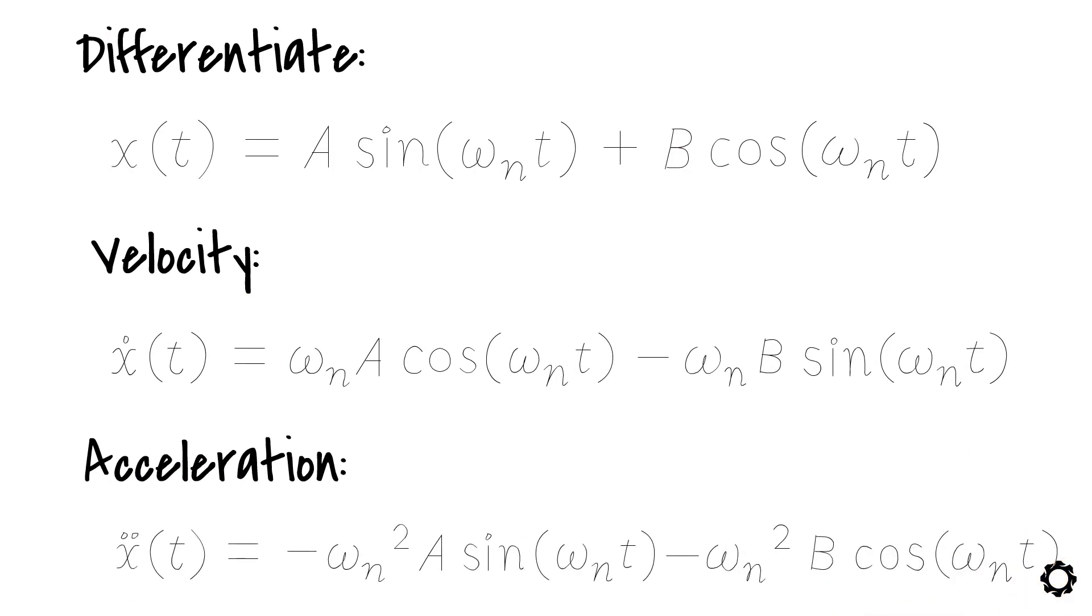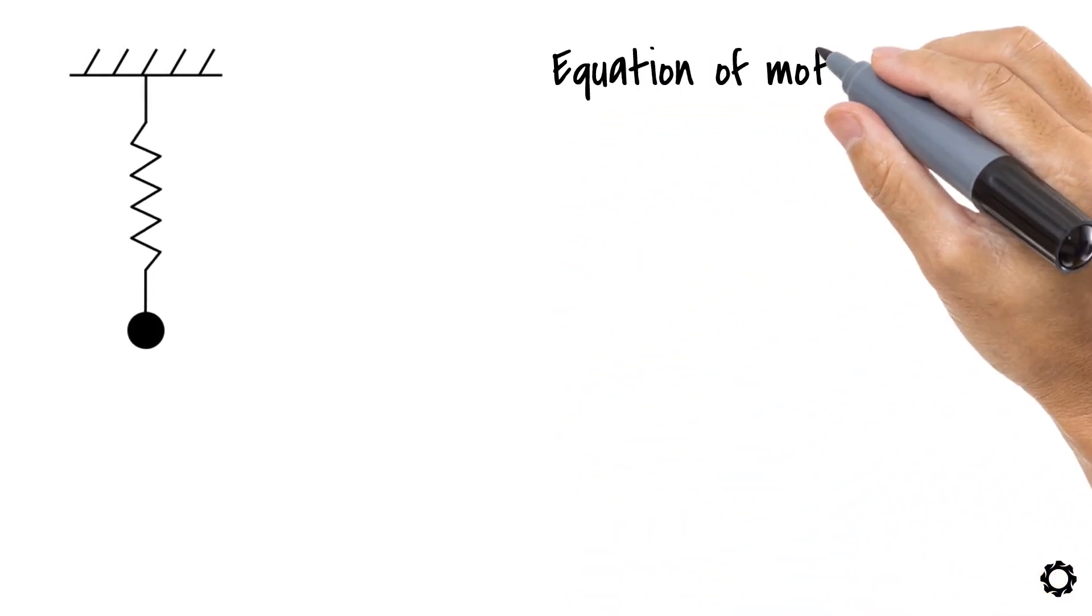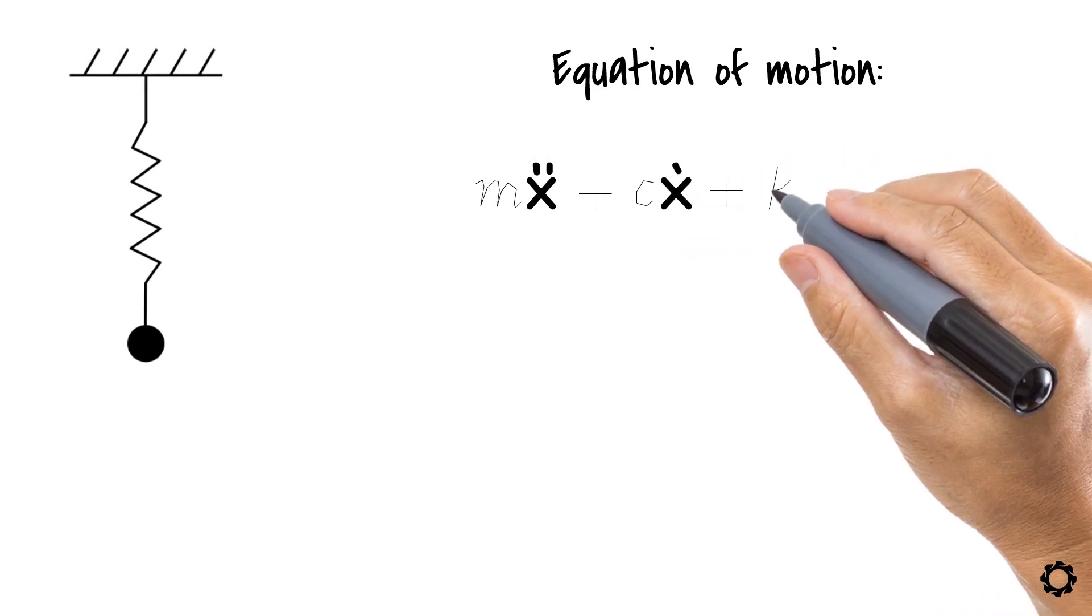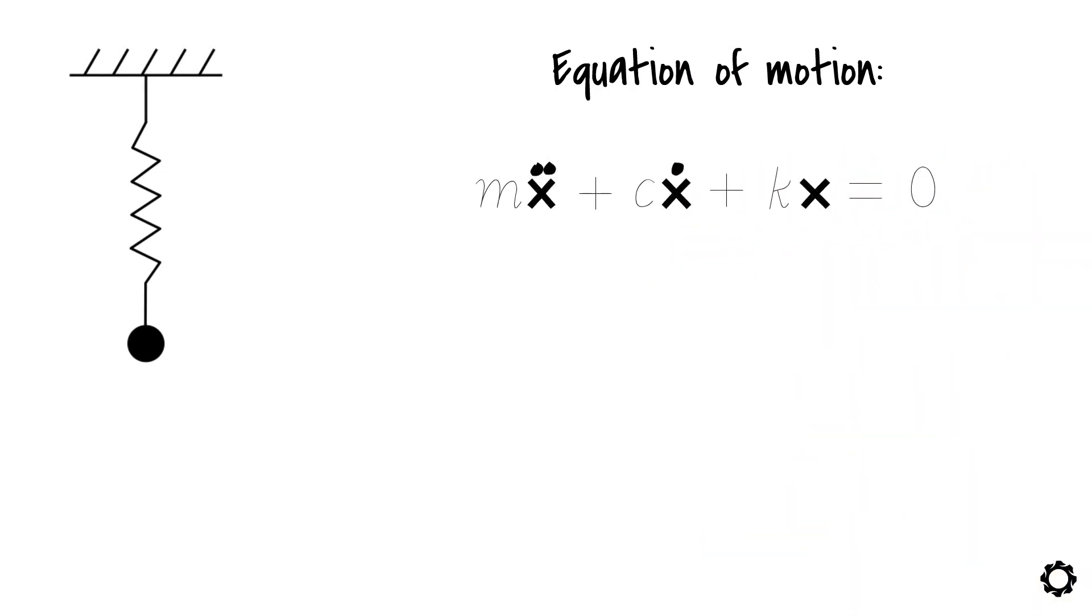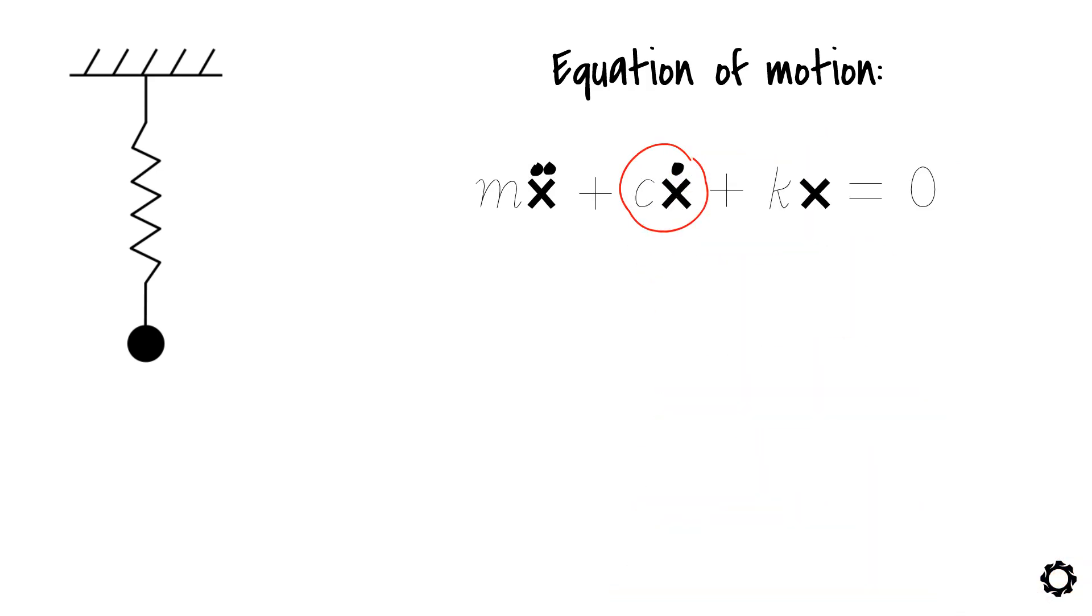Now, let's see how the solution of the equation of motion changes when we introduce damping to the system. To begin with, the equation of motion becomes mx double dot plus cx dot plus kx equals zero. So, as you can see, we added the term cx dot into the equation, which is a term related to the damping force, and in which c is the damping constant.